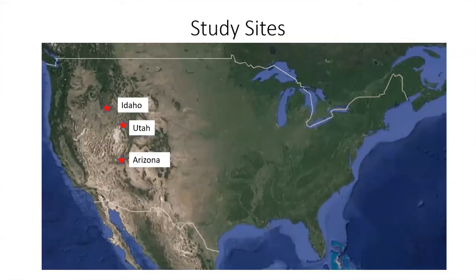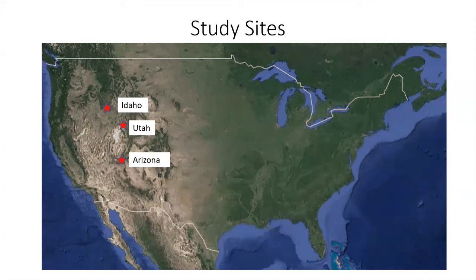We studied the bacterial communities on cheatgrass roots and sagebrush roots at three different locations in the western United States. One location was Mountain Home Air Force Base in Idaho, another was Hill Air Force Base in Utah, and a third was in Arizona north of the Grand Canyon. All three of these sites suffered from cheatgrass invasions.